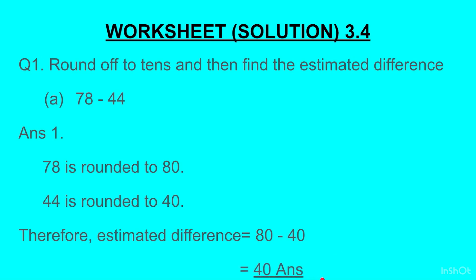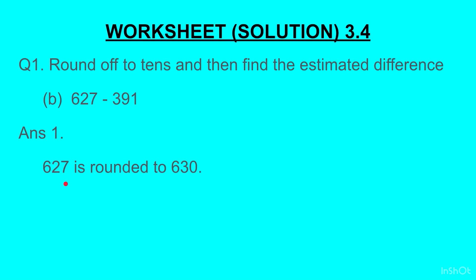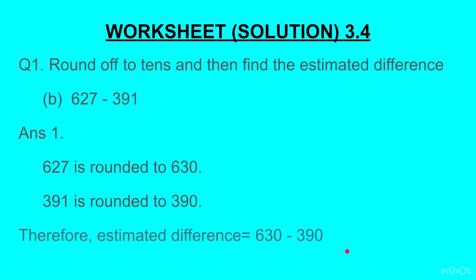Part B: 627 minus 391. 627 is rounded to 630 — rounding off to tens, we look at the ones place; 7 is greater than 5, so we round off to the upper limit, and 2 becomes 3, giving 630. Next, 391 rounds off to 390 because the ones place has 1, which is less than 5. Therefore the estimated difference is 630 minus 390, which equals 240.